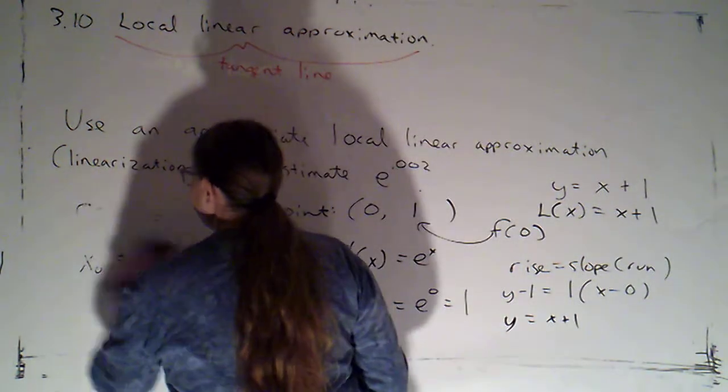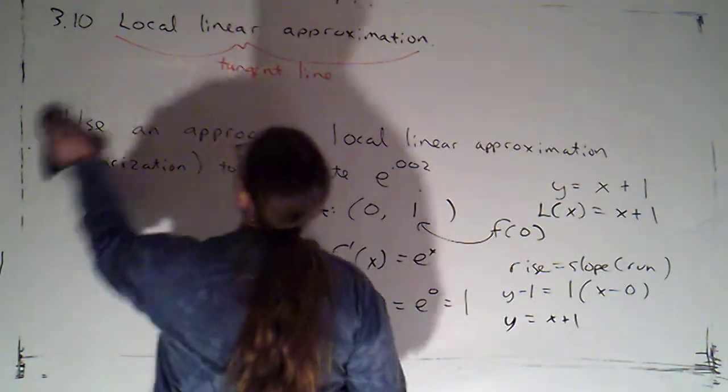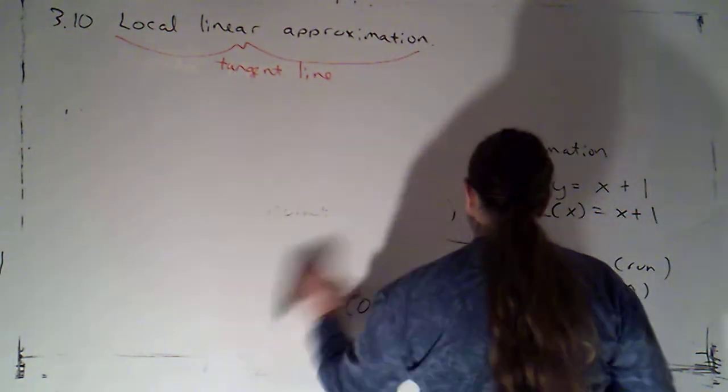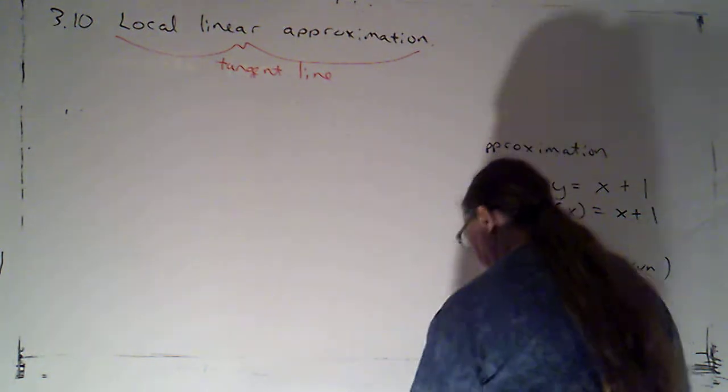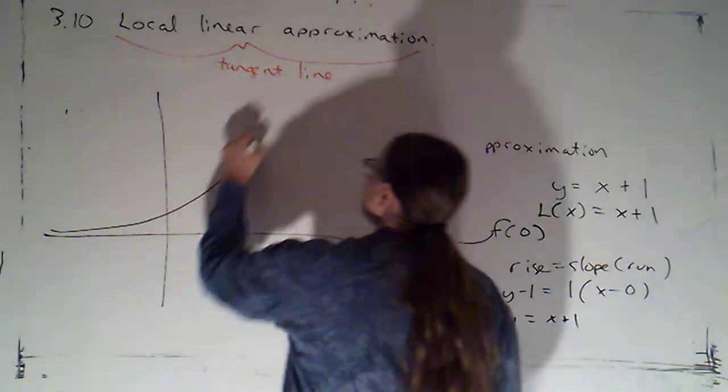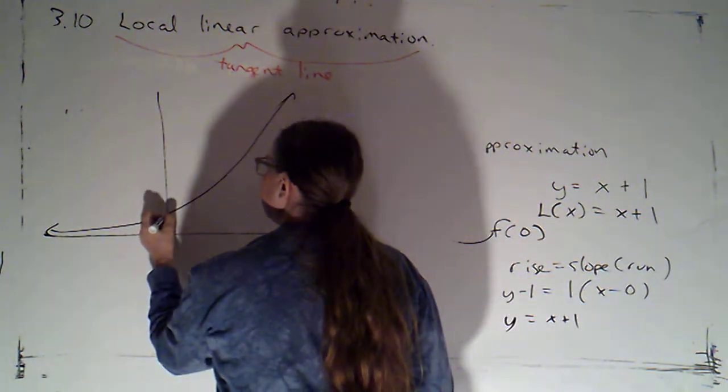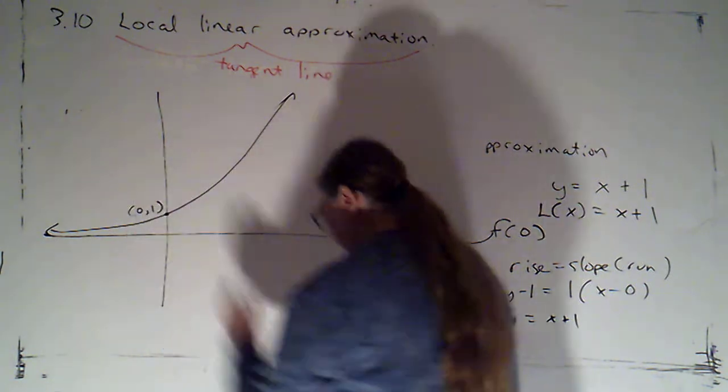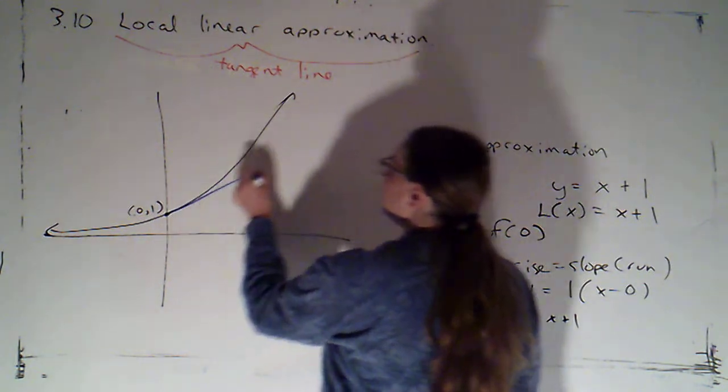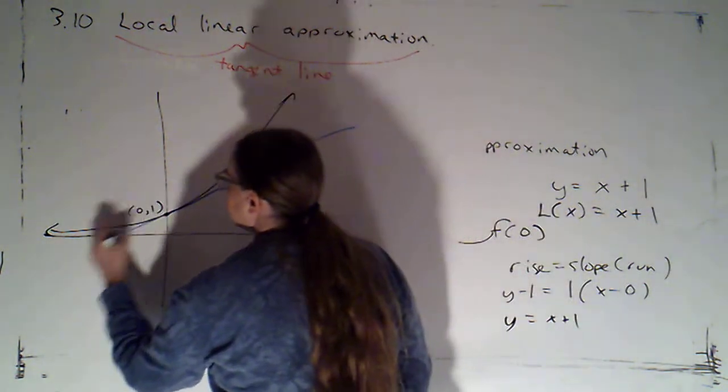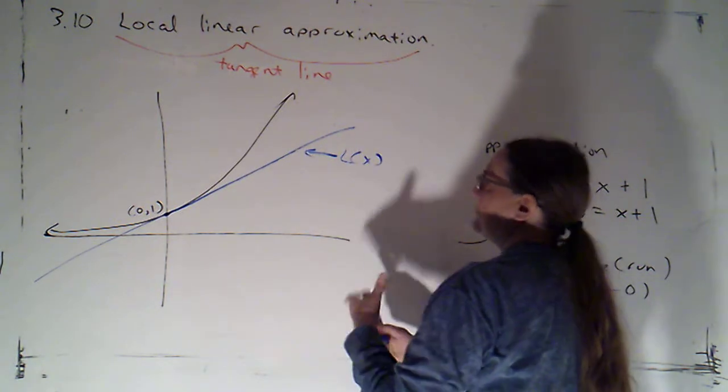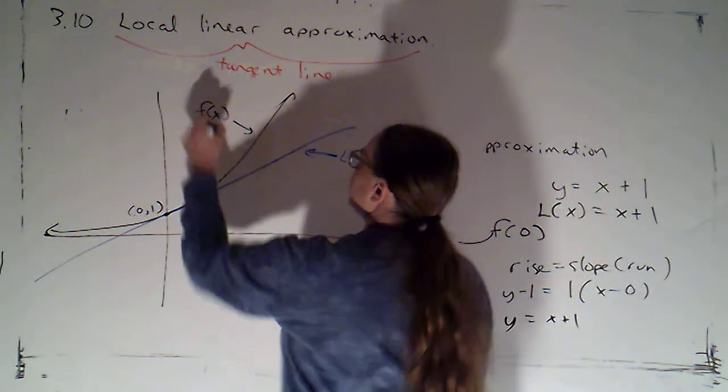And I like to just have a picture to see what's going on. I can finish this problem without drawing a picture, but I'm going to understand the problem more if I draw myself a picture. So here was my function e to the x, and here is the point (0, 1). That's a point that's easy to work with, so we were able to calculate the tangent line here. So this is L(x) and the curve is the graph of f(x).